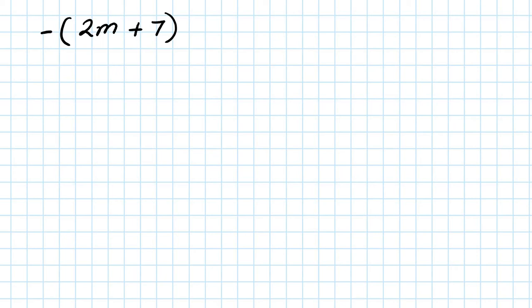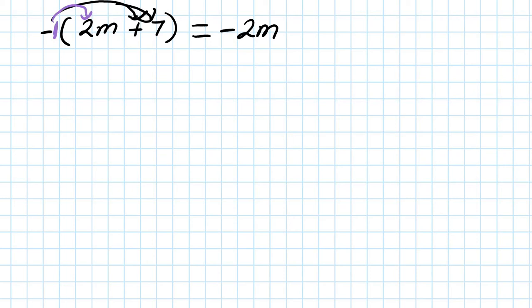Next one: negative, open bracket, 2m plus 7. Remember, nothing in front of the bracket means 1, so that means negative 1. Negative 1 times 2m is minus 2m. And minus 1 times 7 gives me minus 7. So that's the answer — that's how you remove the bracket.